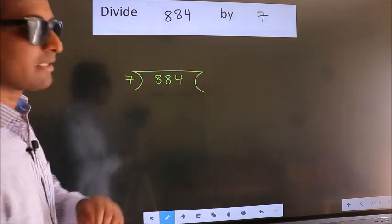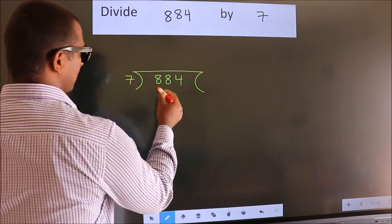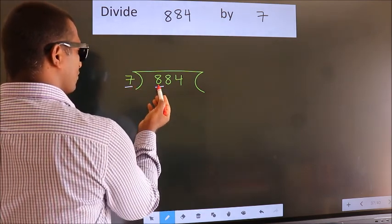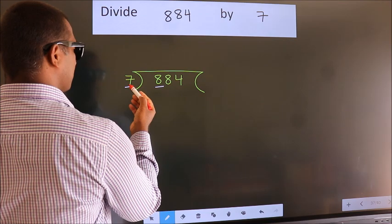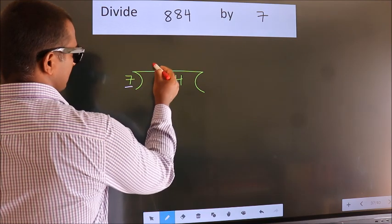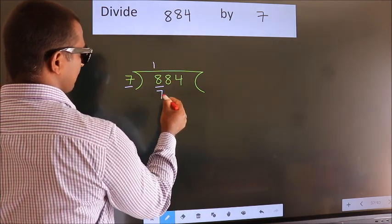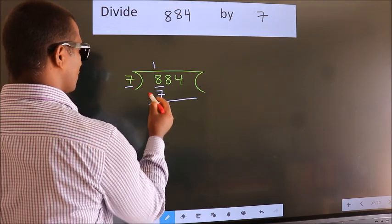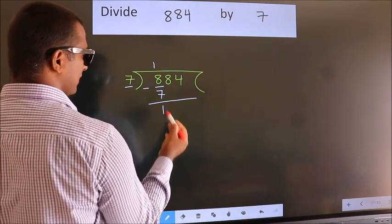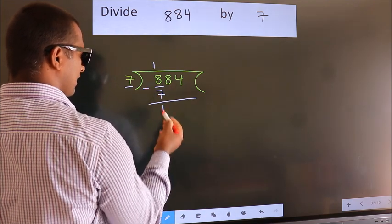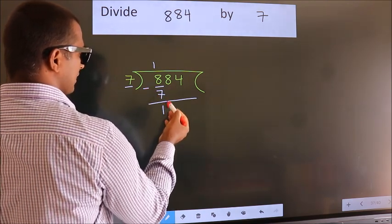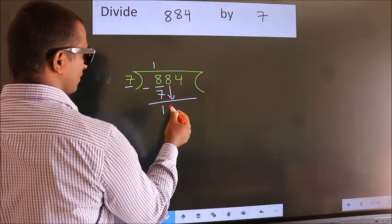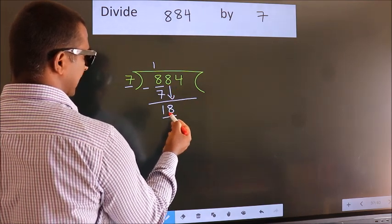Next, here we have 8, here 7. A number close to 8 in the 7 times table is 7 once, which is 7. Now we should subtract. We get 1. After this, bring down the beside number. So, 8 down. So, 18.